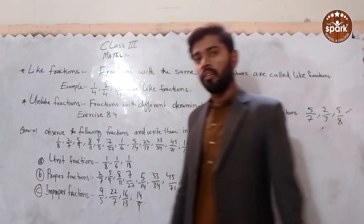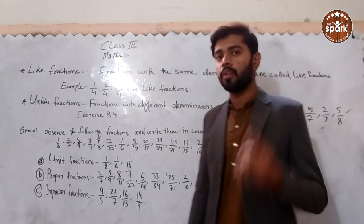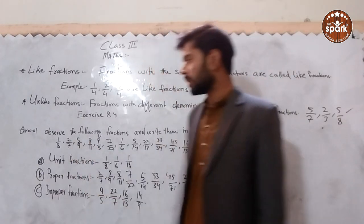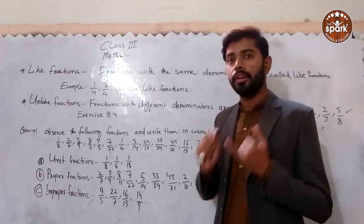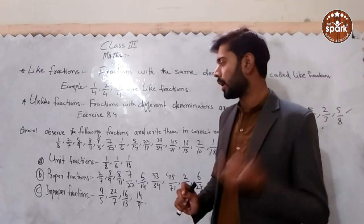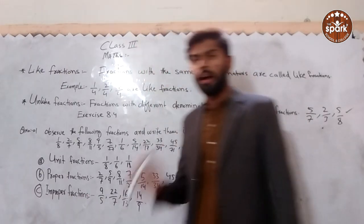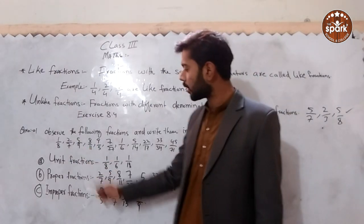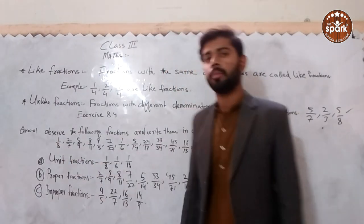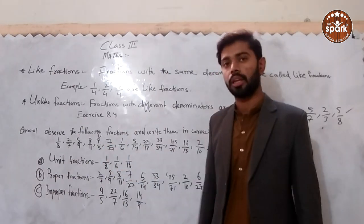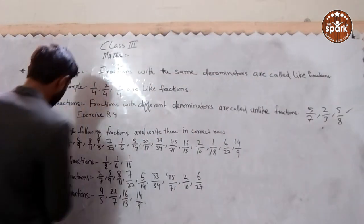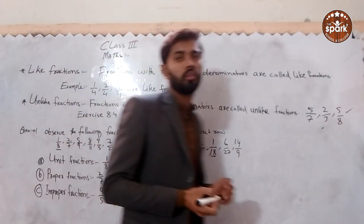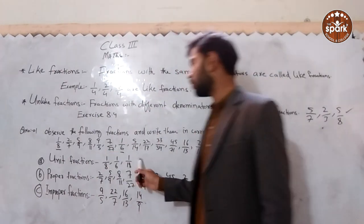For unit fractions, the numerator is 1. Fractions like 1 upon something — where the numerator is 1 — are called unit fractions. From the given fractions, those with numerator 1 are unit fractions.